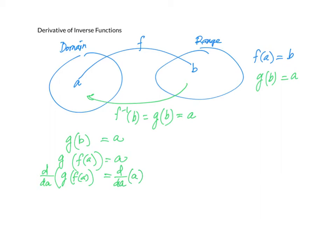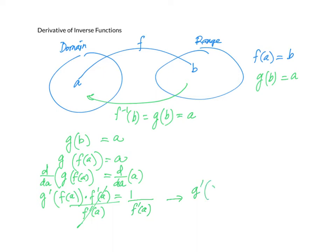The derivative with respect to a of g is g prime. By the chain rule, g prime of f of a times f prime of a equals 1. Now dividing both sides by f prime of a, we get g prime of f of a equals 1 over f prime of a, or g prime of b equals 1 over f prime of a. That is our definition.